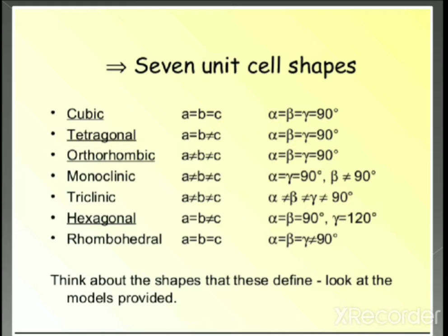In the hexagonal system, edge length a = b but b ≠ c, and angles alpha = beta = 90° while gamma = 120°. In the rhombohedral system, all edge lengths are equal (a = b = c), and axial angles alpha = beta = gamma, but gamma ≠ 90°.